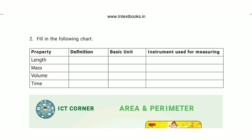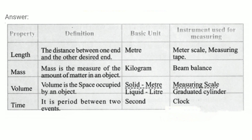Fill in the following chart. Length: the distance between one end and the other desired end; basic unit — meter; instrument — meter scale, measuring tape. Mass: the measure of the amount of matter in an object; basic unit — kilogram; instrument — beam balance. Volume: the space occupied by an object; basic unit — cubic meter (solid), liter (liquid); instrument — measuring cylinder, graduated cylinder. Time: the period between two events; basic unit — second; instrument — clock.